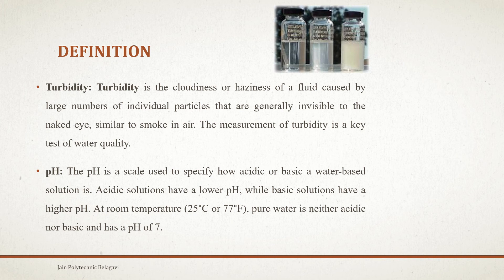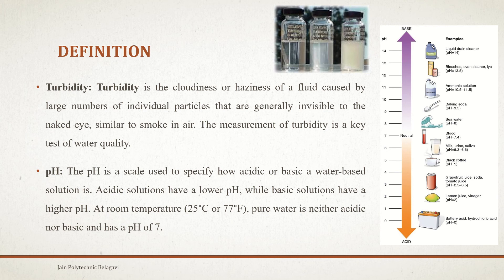Basic solutions have a higher pH, from 7 up to 14, or more specifically from 8 to 14. If the water sample measures in this range, we say it is basic. At room temperature — 25 degrees Celsius or 77 degrees Fahrenheit — pure water is neither acidic nor basic and has a pH value of 7.